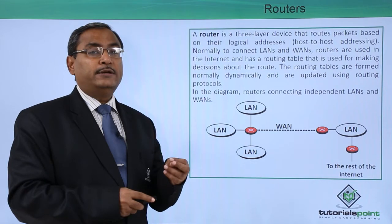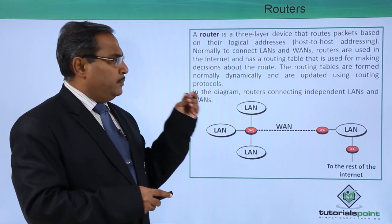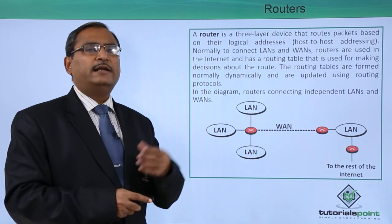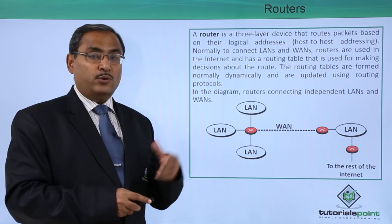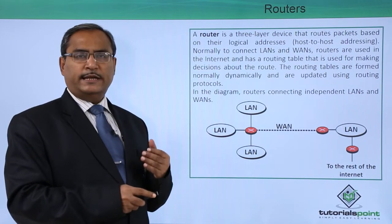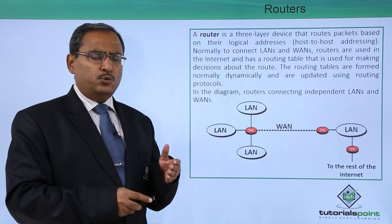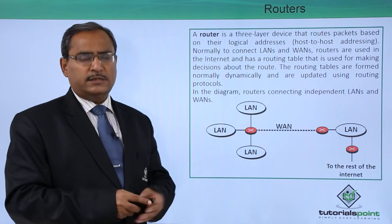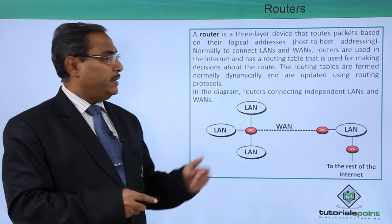You might ask why the routing table has to be created dynamically. It is created dynamically because different routes may have different congestion levels at different time intervals. Along with time, sometimes the congestion will be increasing on a certain route, sometimes it will be decreasing — so it is time-variant. Obviously, a route which is preferable right now may not remain preferable in the next time period, which is why the routing table is created dynamically.